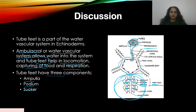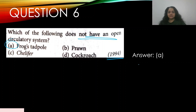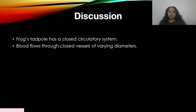Question number six: which of the following does not have an open circulatory system? — appeared in 1994 — A) frog's tadpole, B) prawn, C) Calotes, D) cockroach. Frog's tadpole does not have an open circulatory system — it has a closed circulatory system where blood flows through arteries, veins, and capillaries. In an open circulatory system, blood flows through sinuses instead. The answer is A.